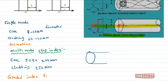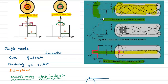Graded index fiber has a refractive index profile where the refractive index decreases continuously from the center outward. The refractive index is at a maximum at the center of the core. The refractive index profile is circularly symmetric, and light rays suffer continuous refraction in the core. This fiber can be single mode or multi-mode.